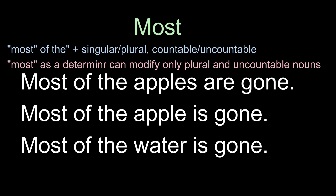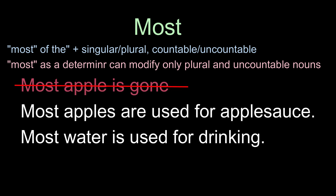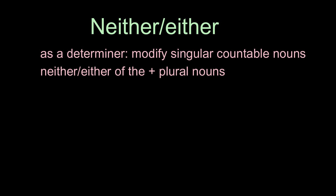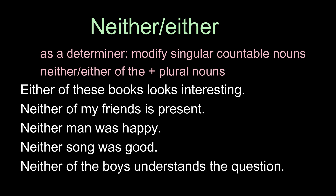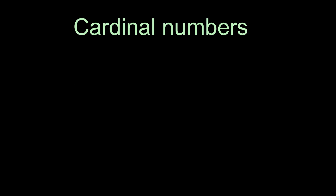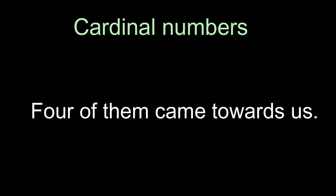When it does not refer to a specific thing, 'most' cannot be used with a singular countable noun form. For example: 'Most apples are used for applesauce,' 'Most water is used for drinking.' 'Neither' and 'either' are used with a singular noun form, but when used as pronouns they are followed by plural noun forms after 'of.' For example: 'Either of these books looks interesting,' 'Neither of my friends is present,' 'Neither man was happy,' 'Neither song was good,' 'Neither of the boys understands the question.' Cardinal numbers can be used at the beginning of a noun phrase as pronouns: 'Four of them came towards us.'